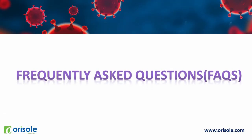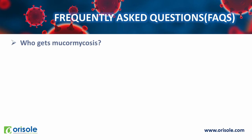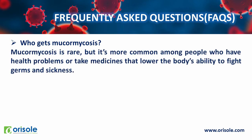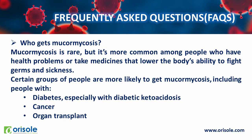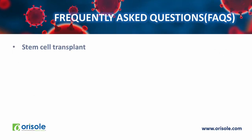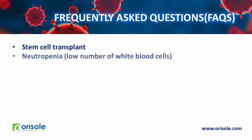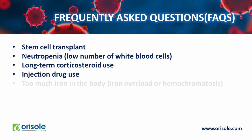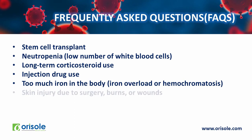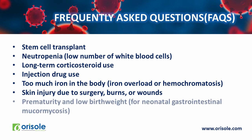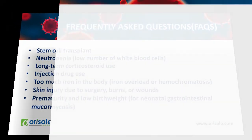Now let us see frequently asked questions about mucormycosis or black fungus. Who gets mucormycosis? Mucormycosis is rare but more common among people who have health problems or take medicines that lower the body's immune system. Groups more likely to get mucormycosis include people with diabetes especially with diabetic ketoacidosis, cancer patients, persons who have undergone organ or stem cell transplantation, persons with neutropenia (lower number of white blood cells), persons who use long-term corticosteroids, injection drug users, those with iron overload or hemochromatosis, skin injury due to surgery, burns or wounds, premature and low birth weight neonates, and post-COVID patients who are also now reported with black fungus infection.